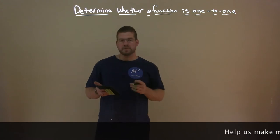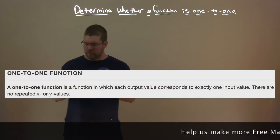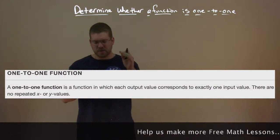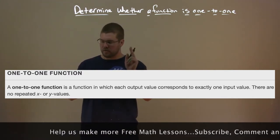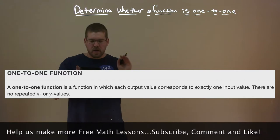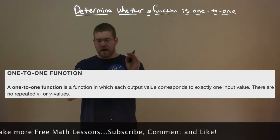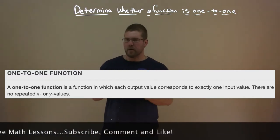What is a one-to-one function? A one-to-one function is a function in which each output value corresponds to exactly one input value. There are no repeated x or y values.